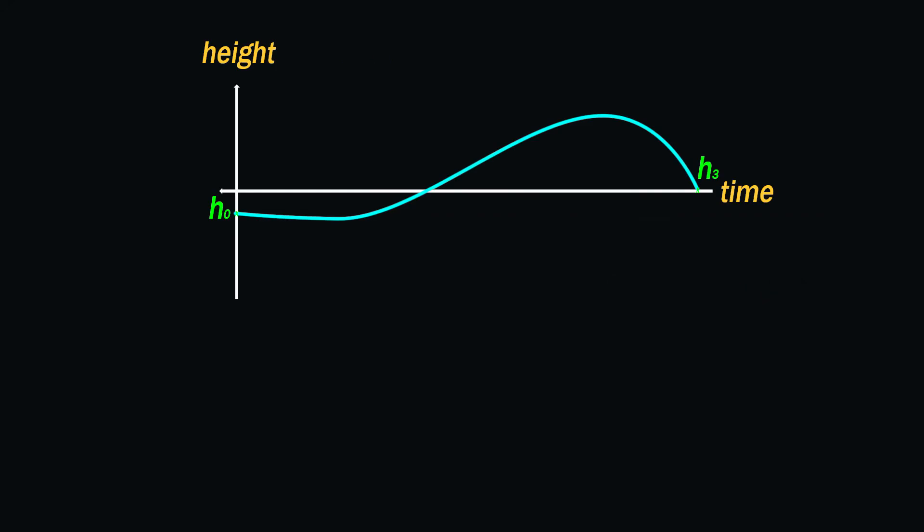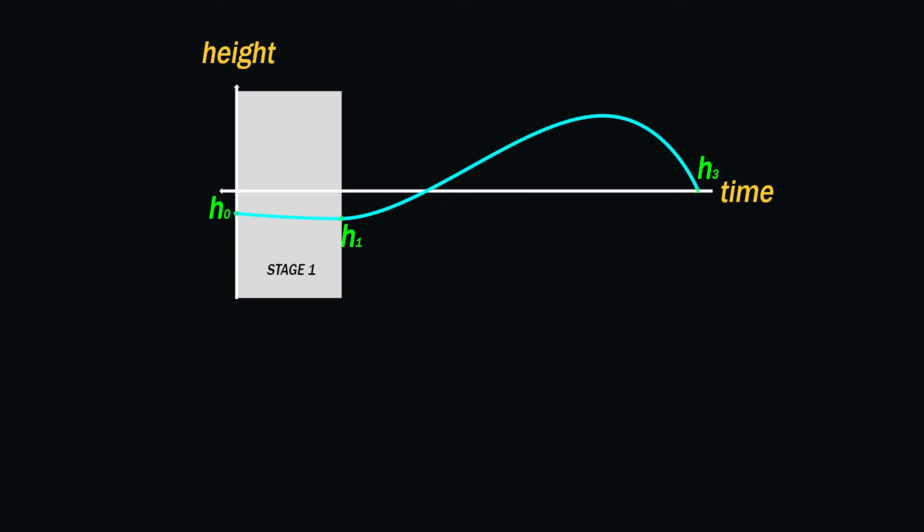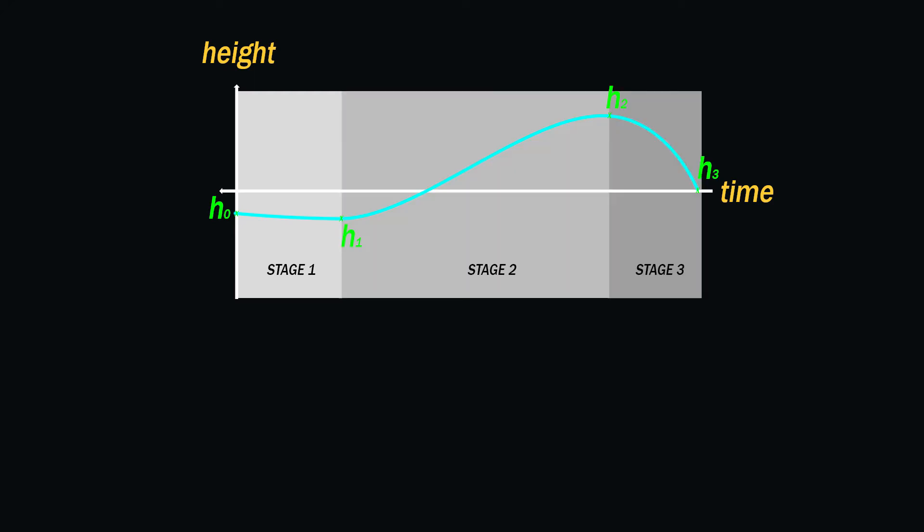There are two other points of interest which help us describe the shape of this curve. Let's label H1 as the height of the body at the end of stage 1 of sine wave motion when the body is in a relaxed and balanced position. And let's label H2 as the height of the body when it reaches an apex at the end of stage 2 of sine wave motion.